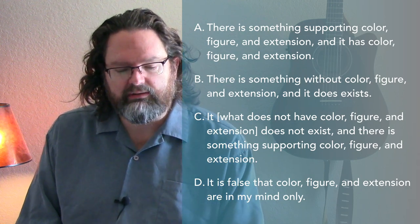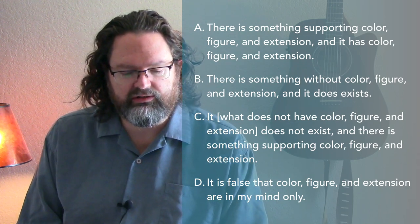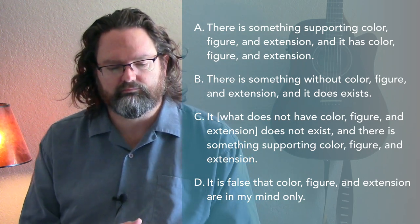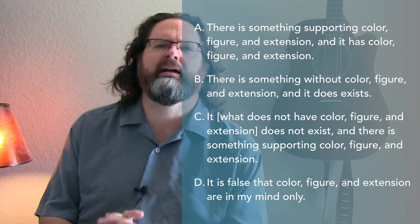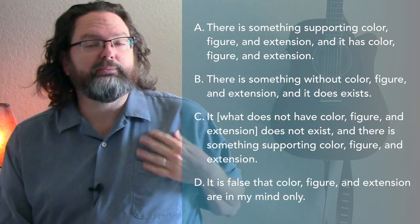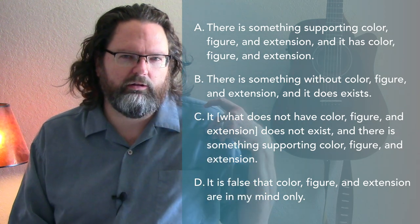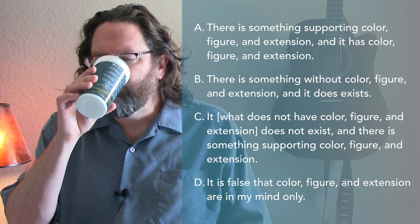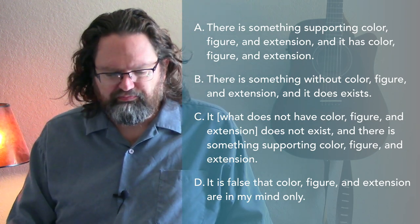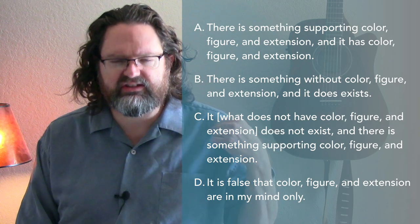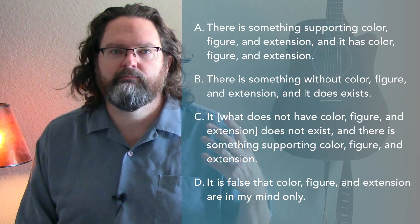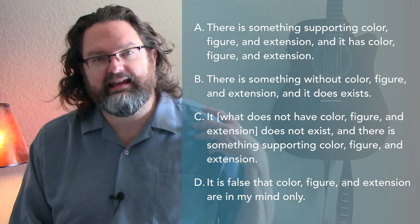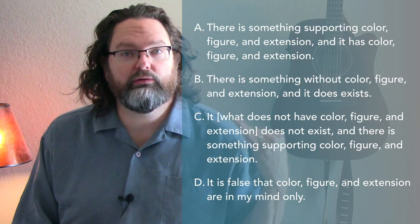If we reject that, we say there is something supporting color, figure, and extension, and it has color, figure, and extension. How would this play out? So we've got the substance of matter. We say it's causing blue. But does the substance itself have a color? What if we look close enough at the material, at the atoms, then we'll start to see blue on the atoms?